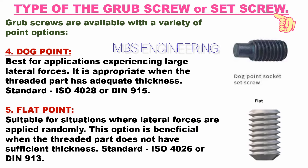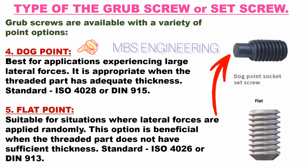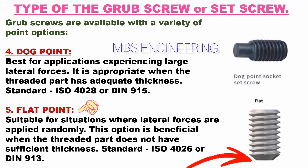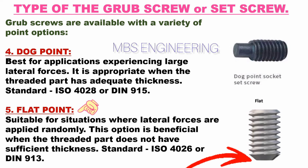Fourth, the dog point set screw: best for applications experiencing large lateral forces. It is appropriate when the threaded part has adequate thickness. Its standard is as per ISO 4028 or DIN 915. Please refer to the picture of the dog point set screw for better understanding. Fifth, the flat point set screw: suitable for situations where lateral forces are applied randomly. This option is beneficial when the threaded part does not have sufficient thickness. Its standard is as per ISO 4026 or DIN 913. Please refer to the picture of the flat point set screw for better understanding.